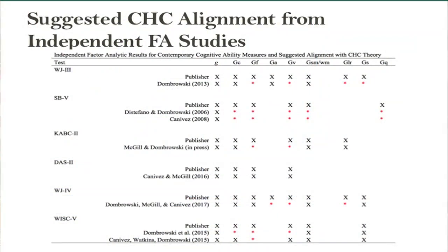Why are we getting these results? PSW methods assume that we're measuring these constructs, these processing abilities, or that we're even locating them at all. Except an independent body of factor and other research over the last 15 years has found problems with virtually every commercial ability measure there is.